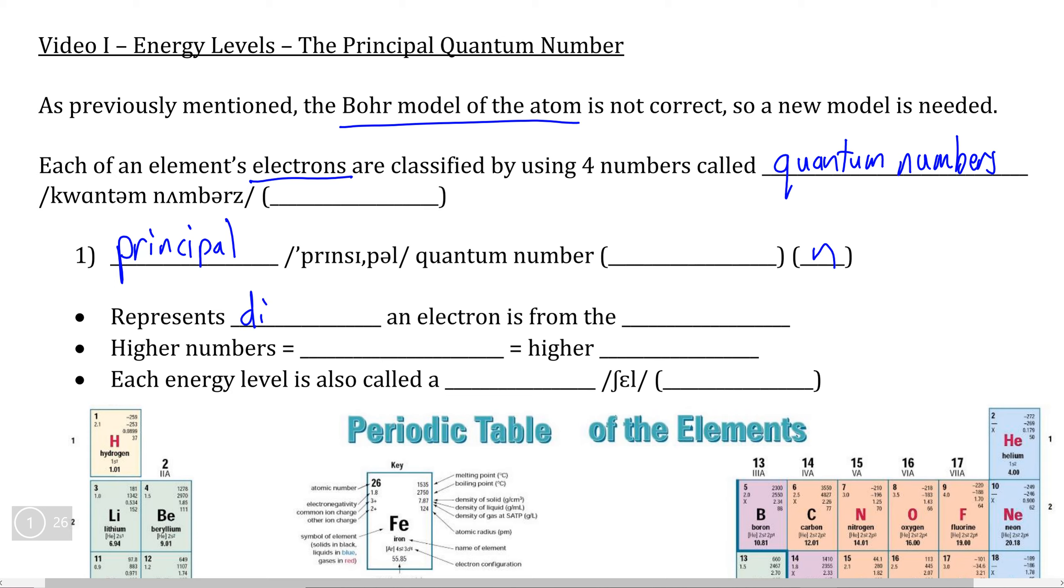Simply put, the principal quantum number represents the distance that an electron is away from its nucleus. The higher the principal quantum number is, the farther that electron is away from its nucleus.